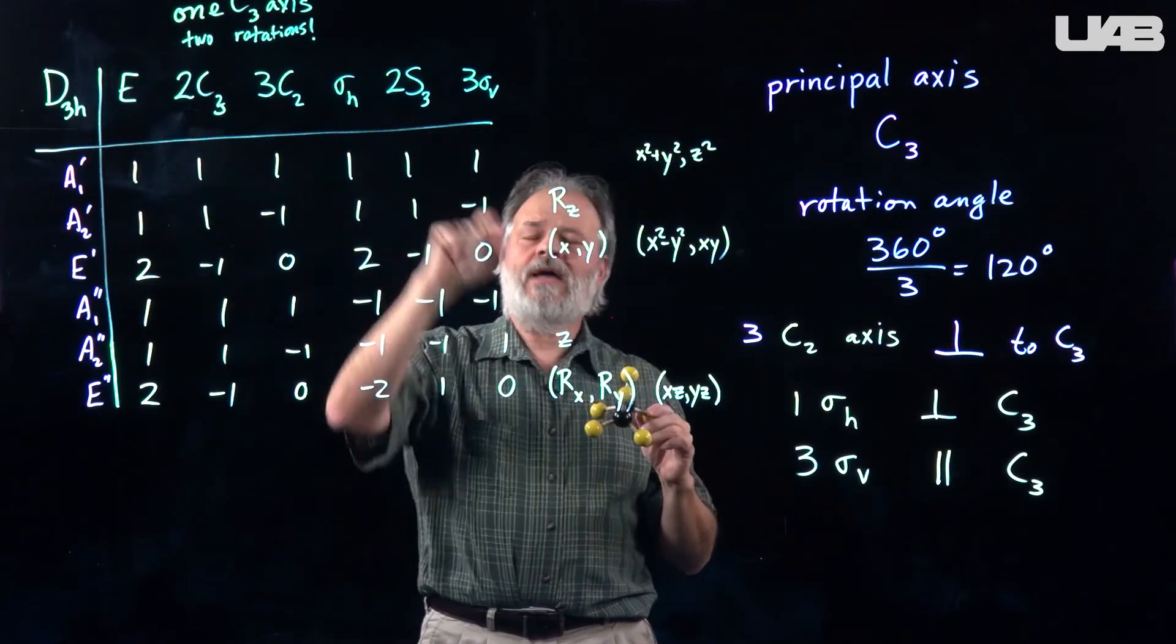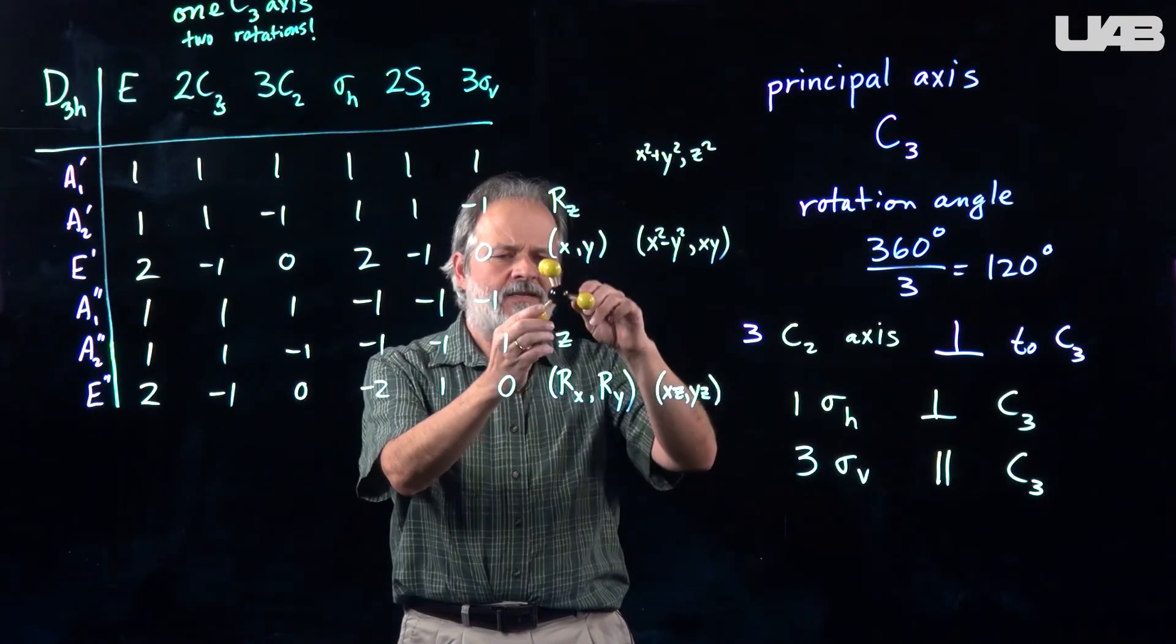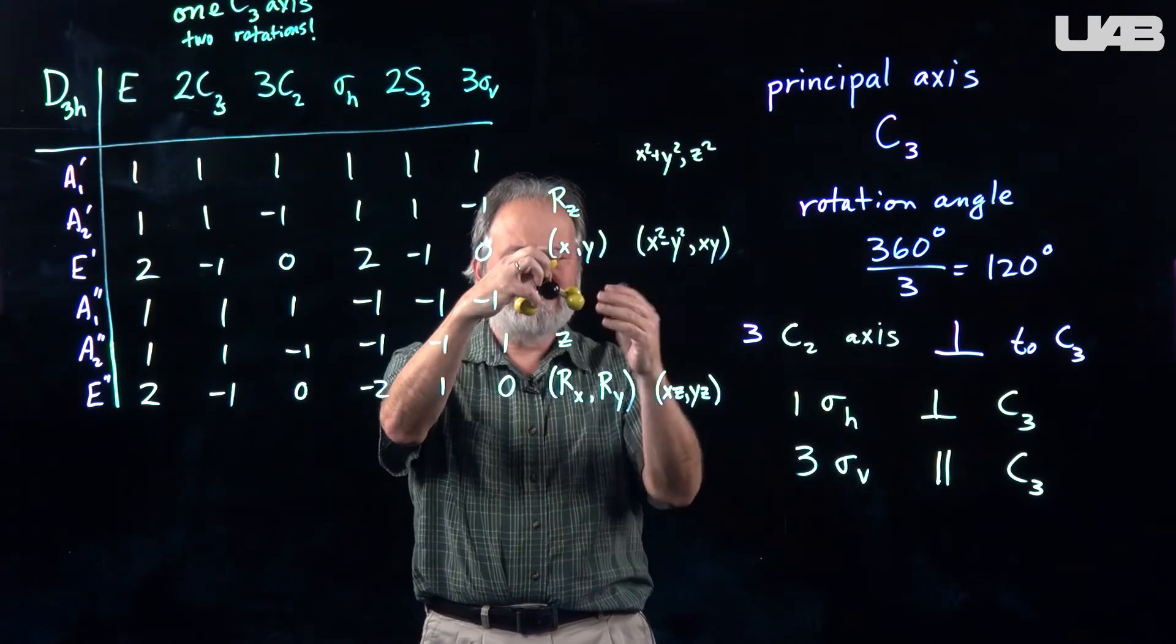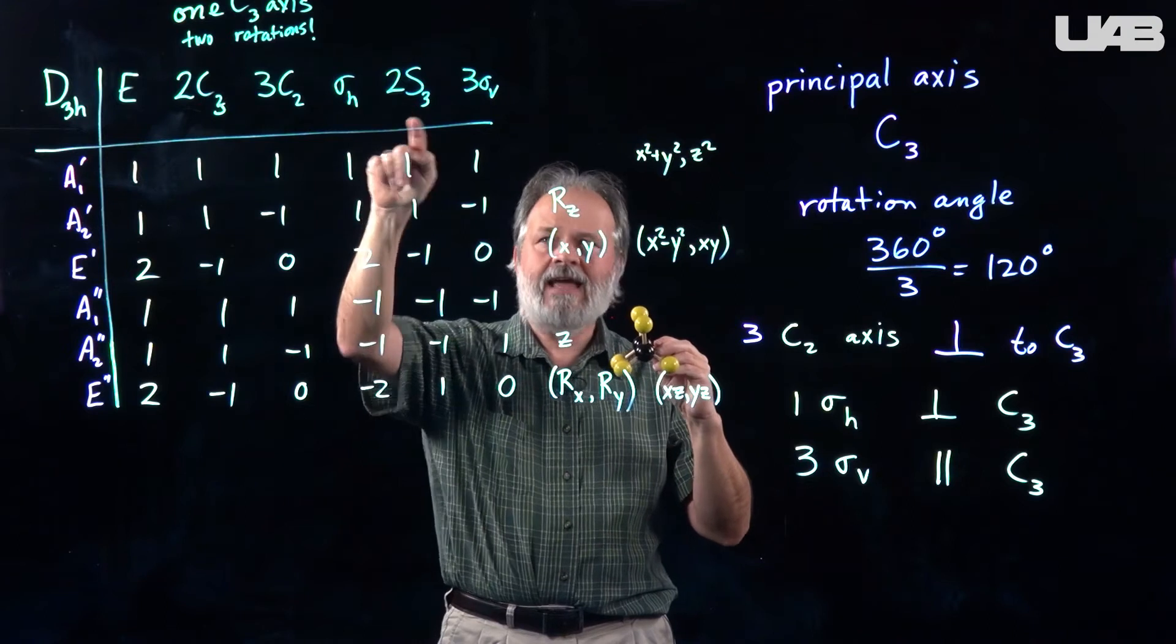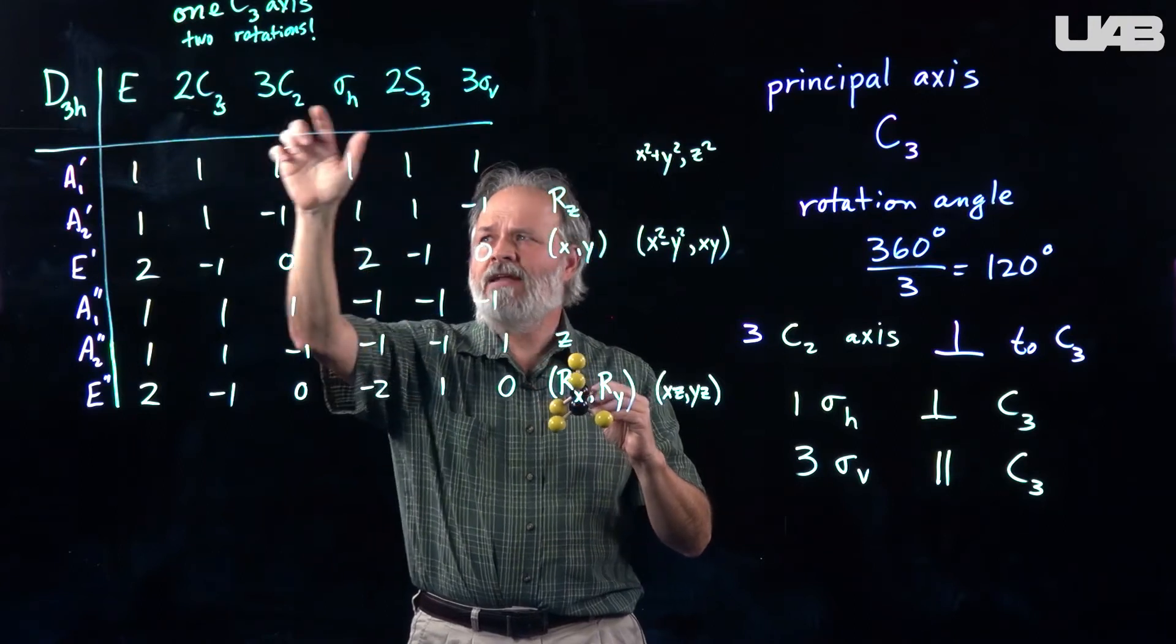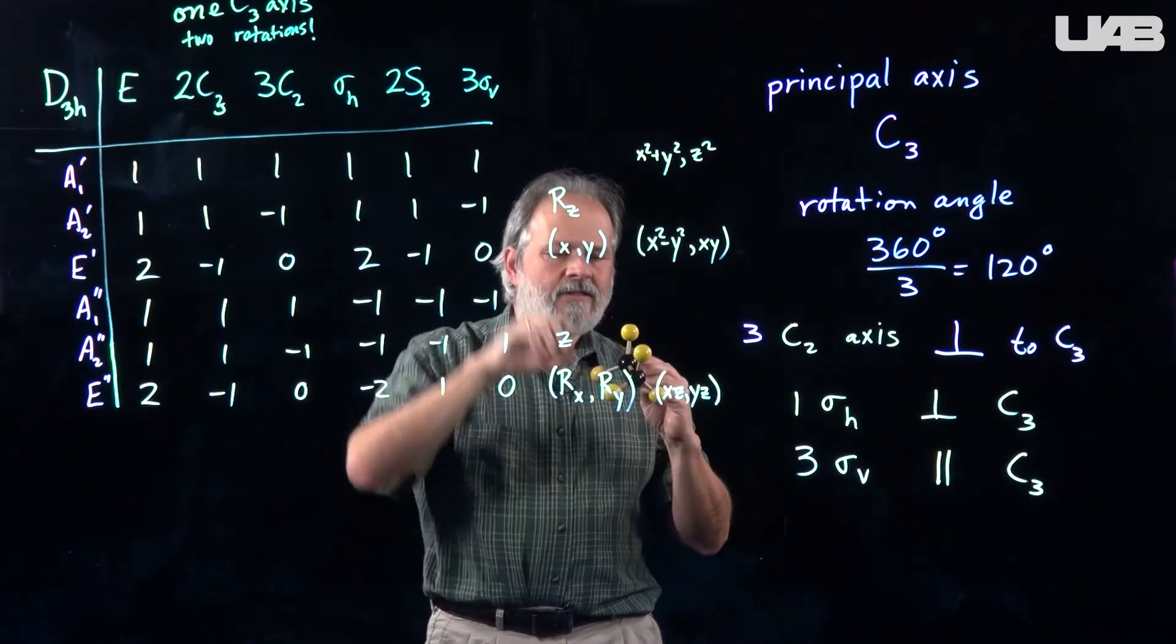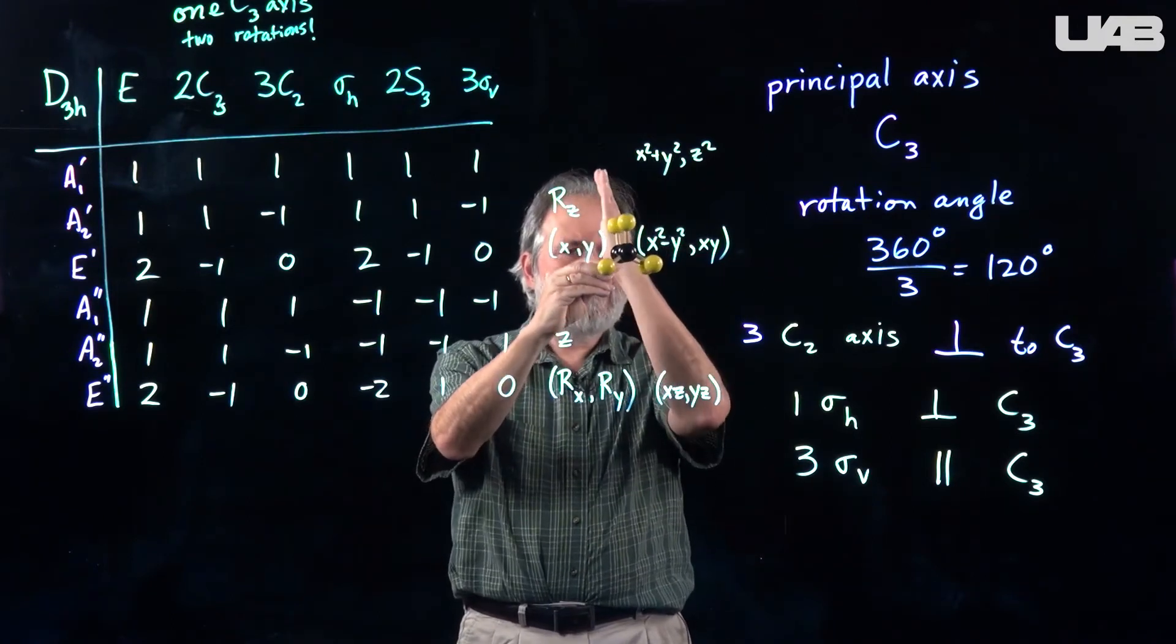And then there are two S3 axes. S3 is a type of rotation we haven't mentioned yet. It means rotate and then reflect. And since a molecule has a principal axis and a sigma H, it automatically has an improper axis of rotation. It's actually possible to have an improper axis of rotation without having these individually. And then finally, the three vertical planes that we identified are mentioned in the character table.